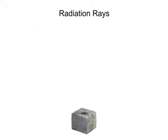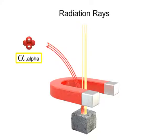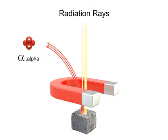Alpha rays carry particles originating from the nucleus of a radioactive atom. These particles consist of two protons and two neutrons. Essentially, they are positively charged helium atoms stripped of their electrons. The magnet causes these particles in the alpha ray to bend in one direction.